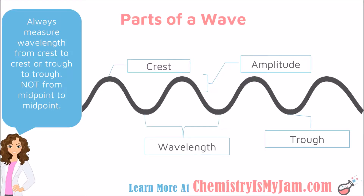I have a wave in front of you. The top point of the wave is called the crest. The bottom point is called the trough. This portion where you're going from the midpoint to the top of the wave indicates the amplitude. If you go from trough to trough or from crest to crest, that distance is the wavelength. The wavelength is the entire wave — from trough to trough or from crest to crest.